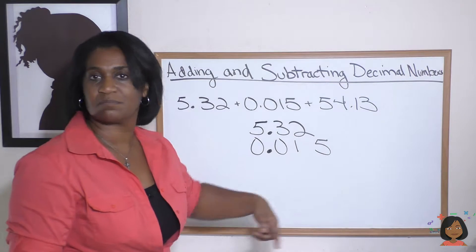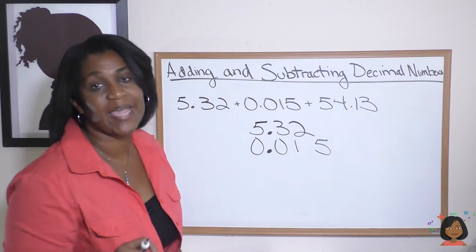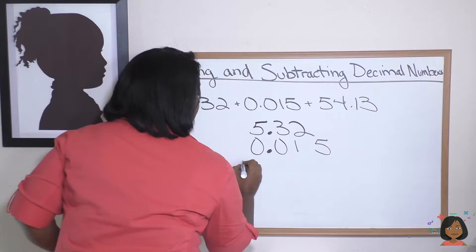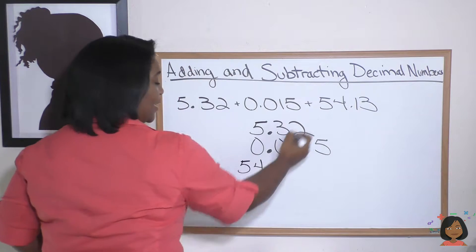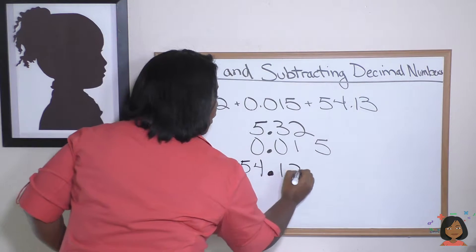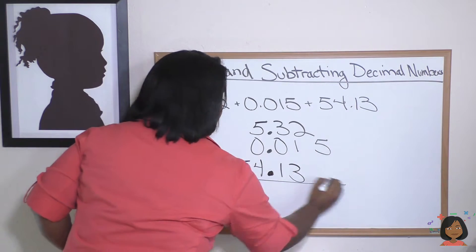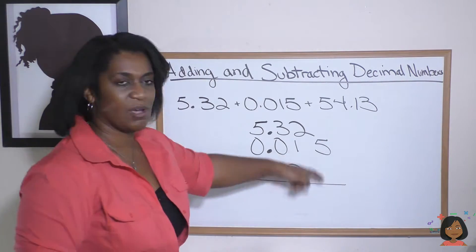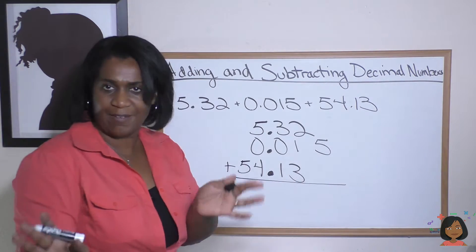Here we go. 54, line up the decimal, 0.13. Now we add. So what, you have nothing to add to that five? That's okay, that five doesn't mind. Go ahead and bring that five down: five.